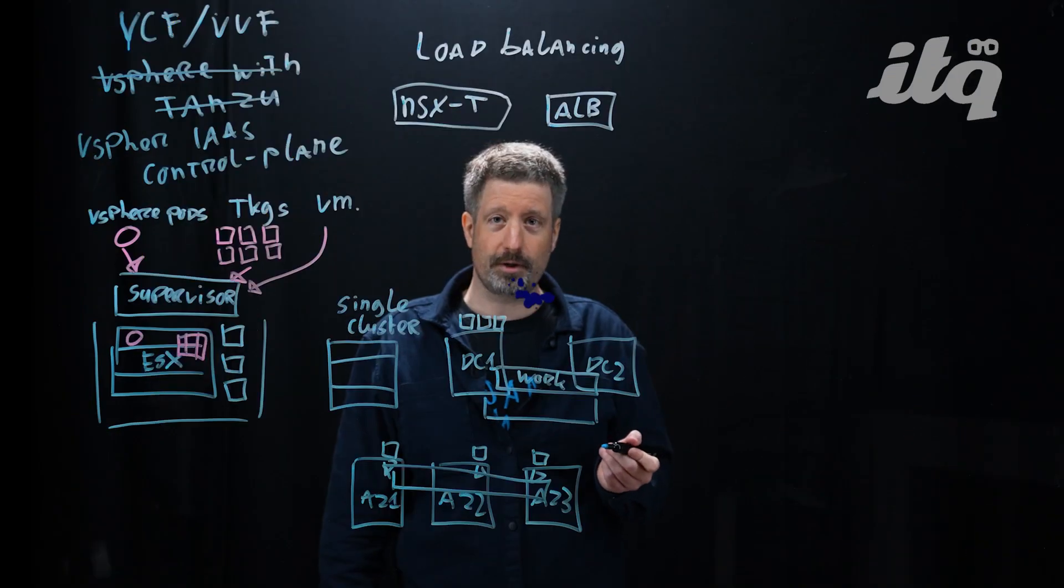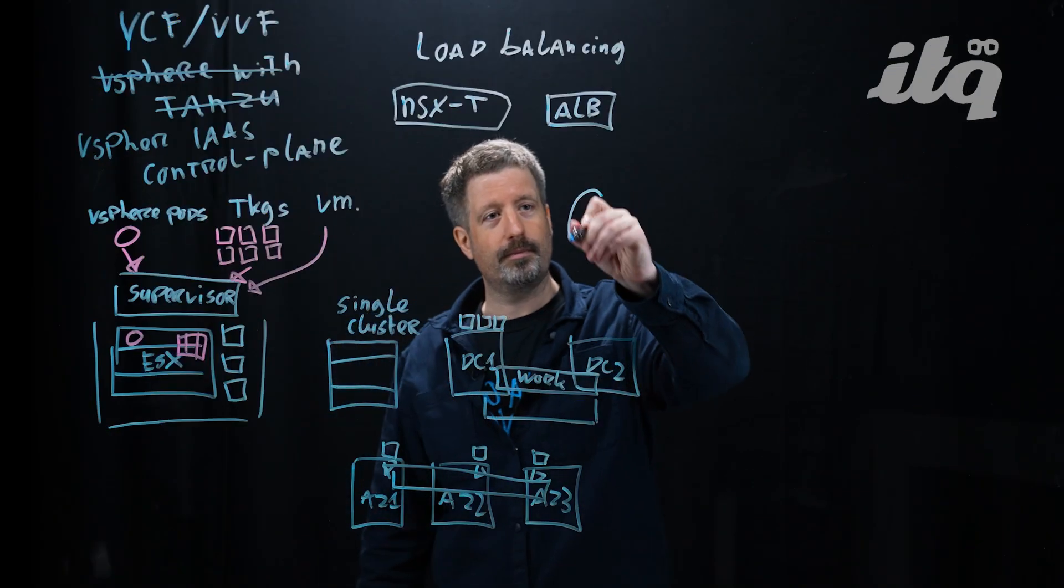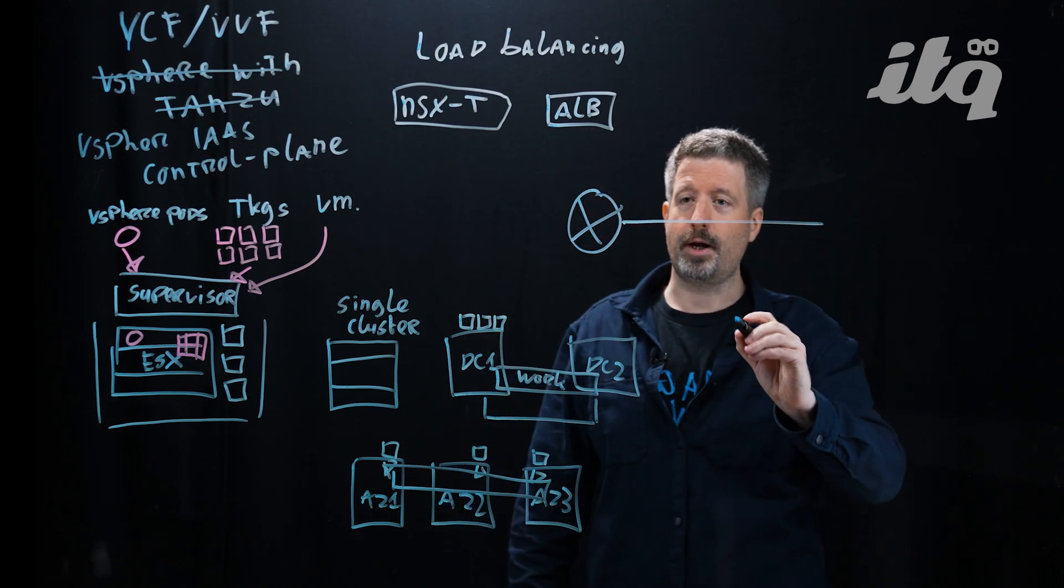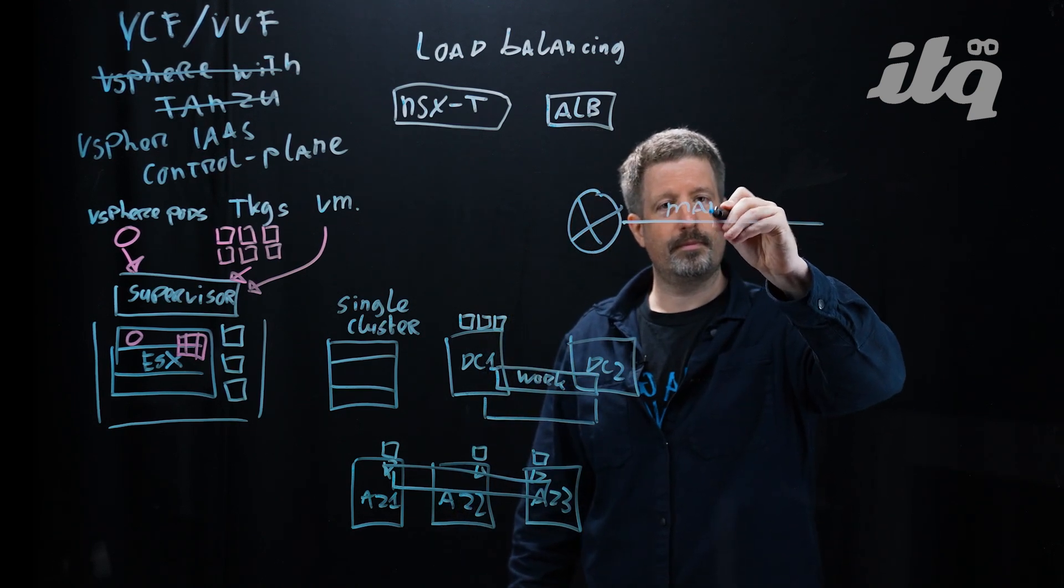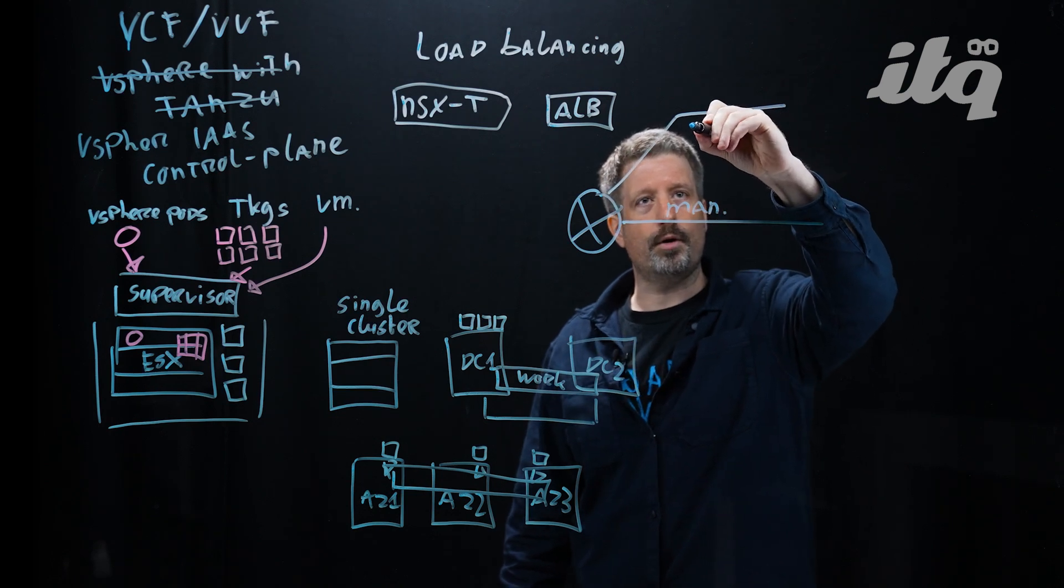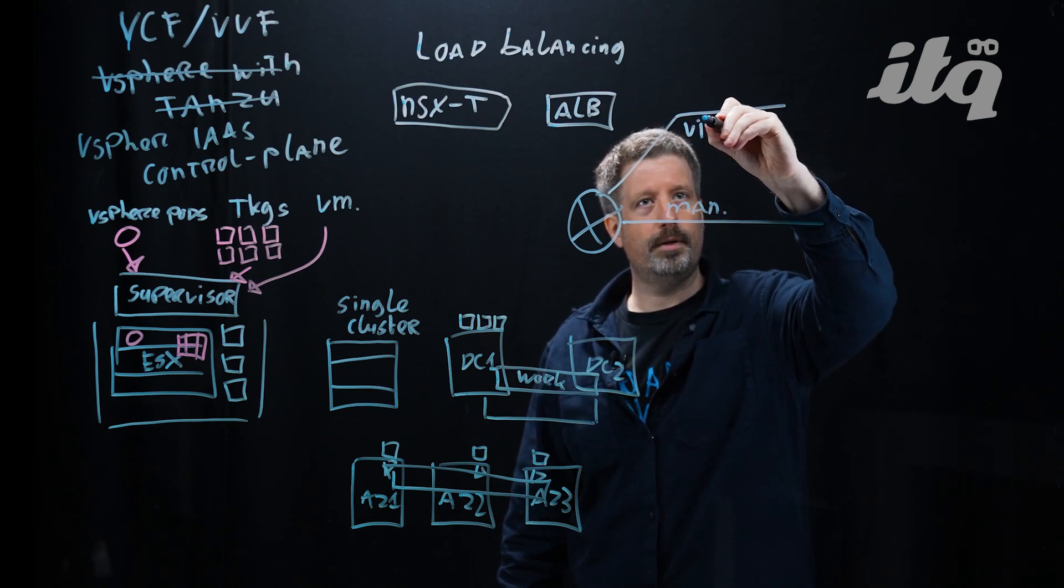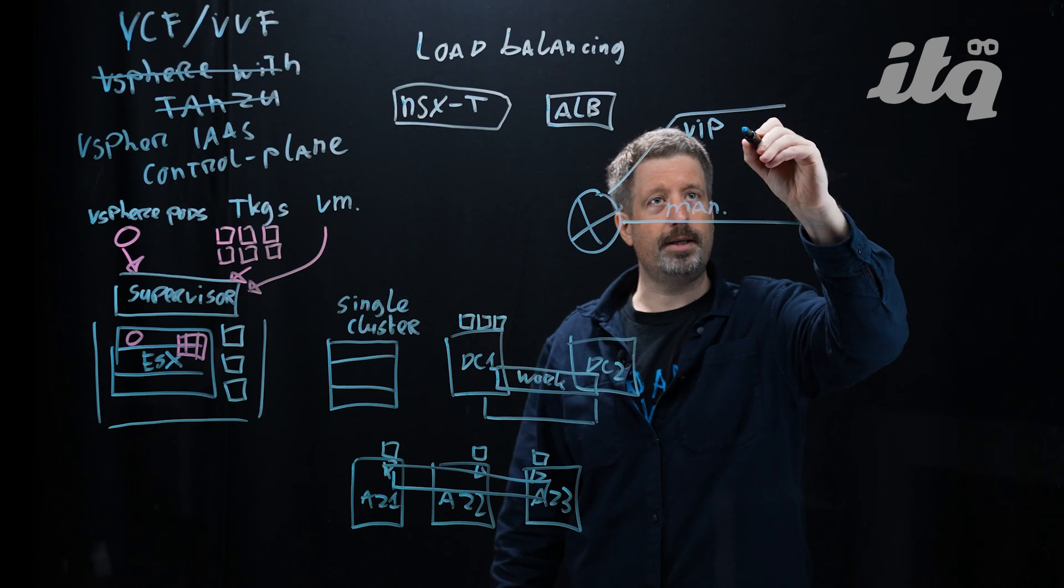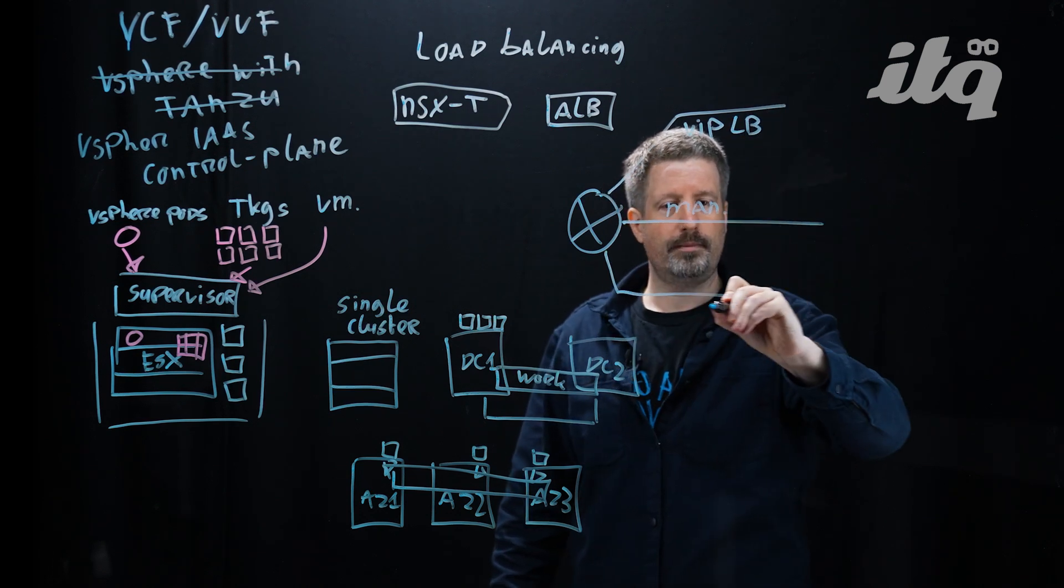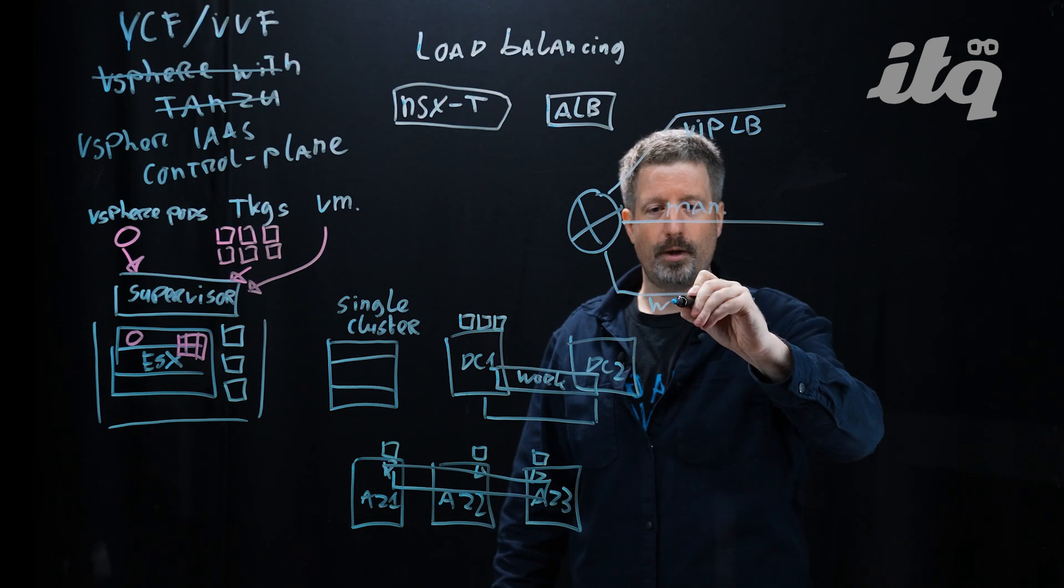So what does the network topology look like? We require at minimum three networks, a management network, a network for the load balanced virtual IPs, and one or several workload networks.